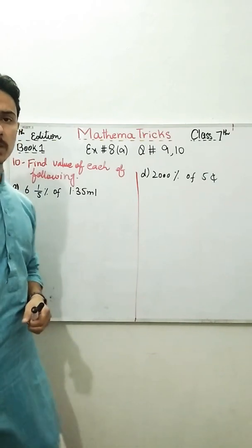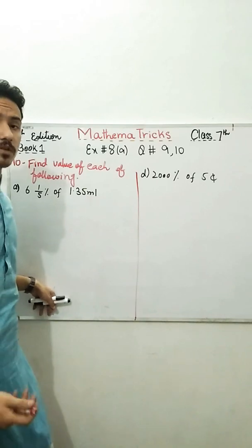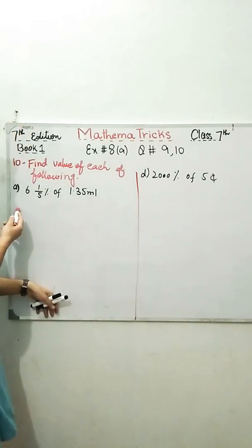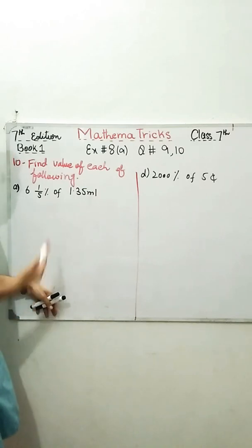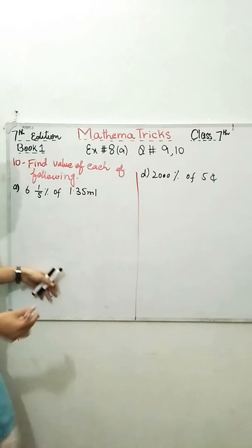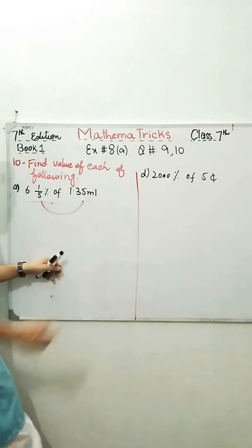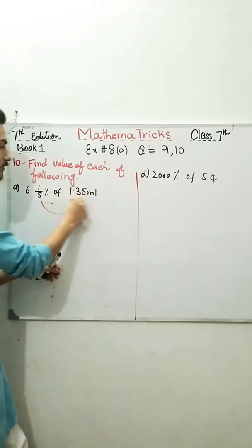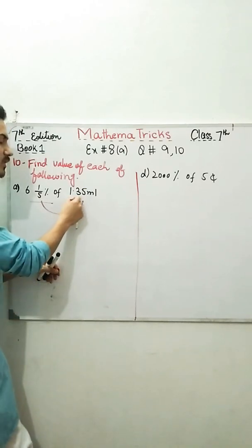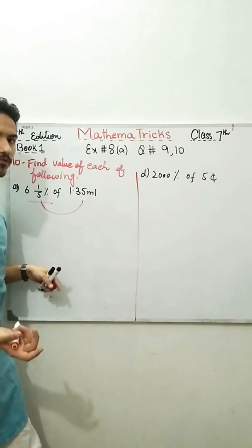Come towards question number 10. The question number 10, find each of the following. We need to find the value of each of the following parts. Let's look towards part A. I need to find 6 whole 1 over 5 percent of 1.35 ml. It means I need to find this percent of this value.